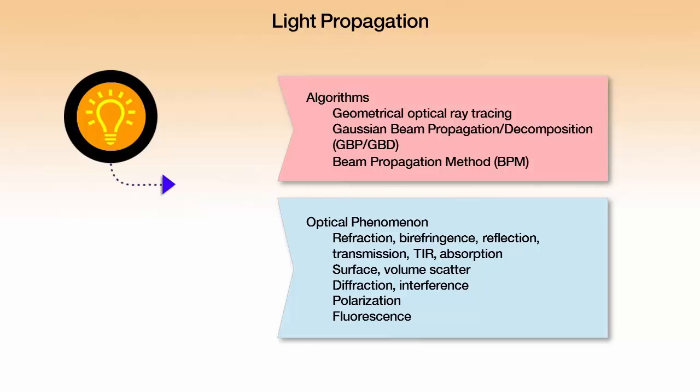The optical phenomena that we can engage in light propagation include refraction, reflection, transmission, absorption, birefringence, and total internal reflection. Refraction is probably most important except for people who work in reflective systems where reflection is very important. Transmission through bulk media — and it could also be the transmission coefficient at a surface — ASAP does those things.